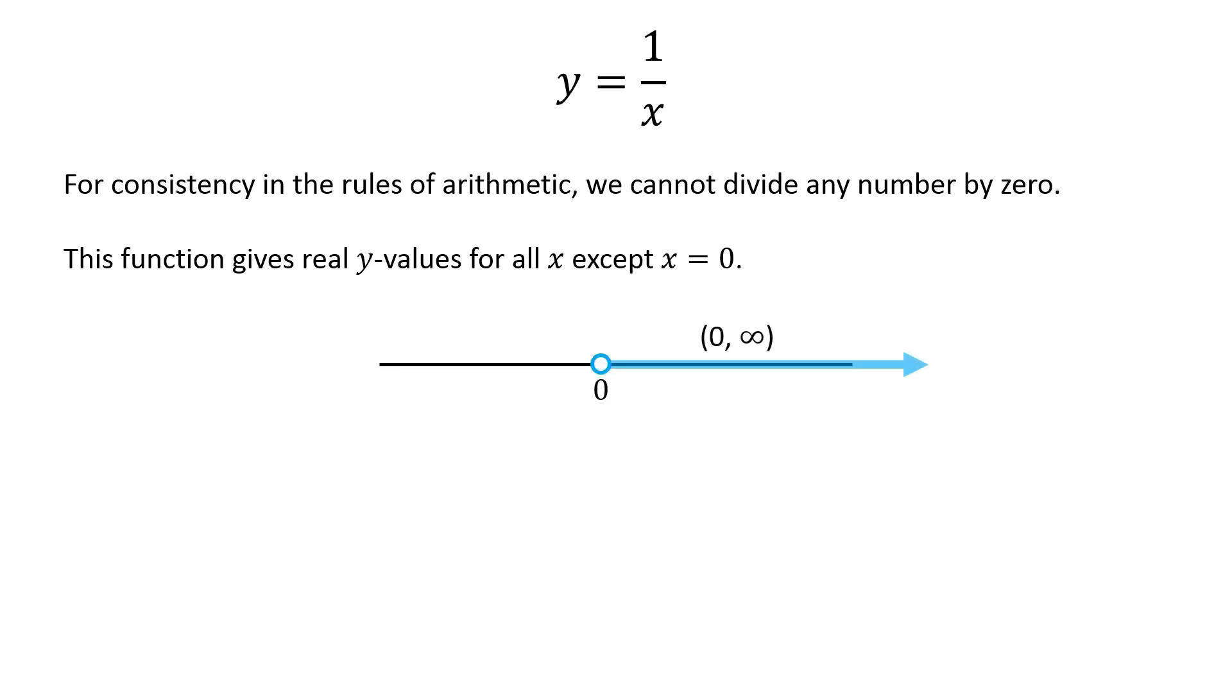Therefore, x can be greater than 0 and less than 0, but not equal to 0. On the number line, the open circle at 0 implies that x cannot be equal to 0.